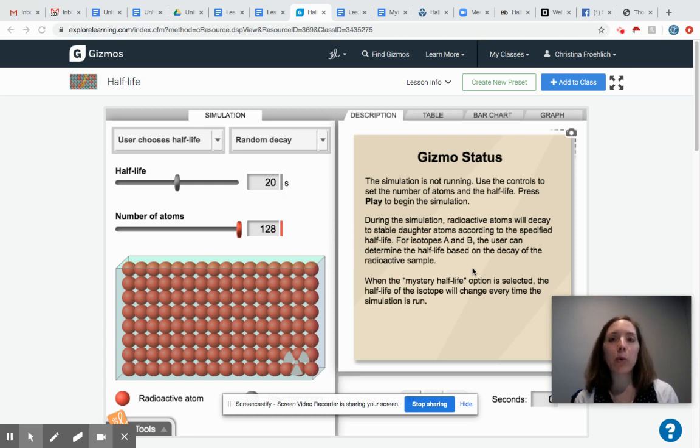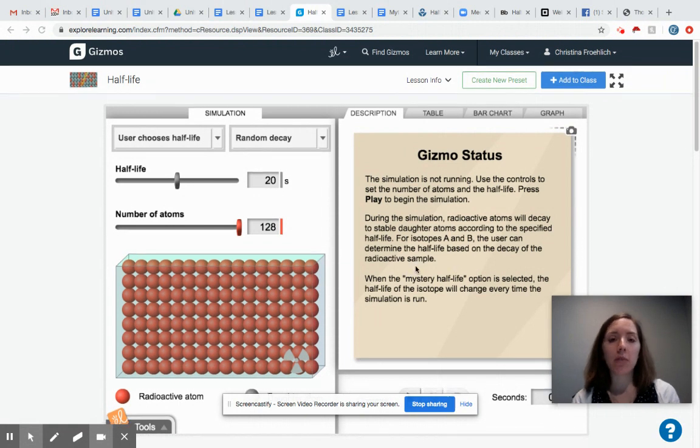Hi everyone! I just wanted to give you a quick gizmo tutorial to walk you through the gizmo that we're going to use for our initial investigations into absolute dating. So once you get into gizmos you will look for the Half-Life gizmo and launch it and it will look like this.